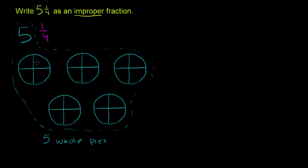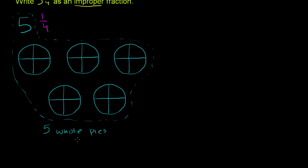Now, I have cut up the pies into 4 pieces. So you can imagine each piece represents a fourth. Now, how many pieces do I have in these 5 pies? Well, I have 4 pieces per pie.